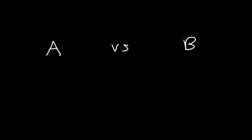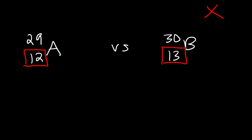Let's work on a few questions. Consider substance A and substance B — just because the letters are different doesn't mean the elements are different. Substance A has an atomic number of 12 and a mass number of 29; substance B has an atomic number of 13 and a mass number of 30. Are these two substances isotopes of each other? The answer is no — isotopes must have the same atomic number. Because the atomic numbers are different, the elements are different, so these are not isotopes of each other.